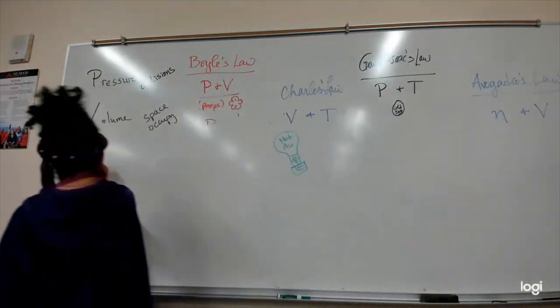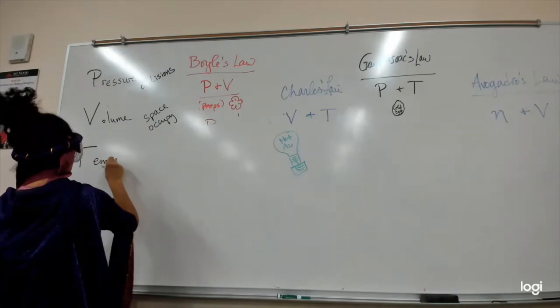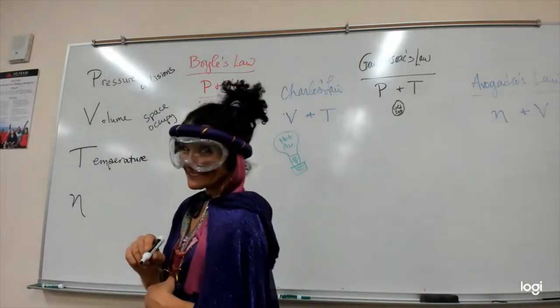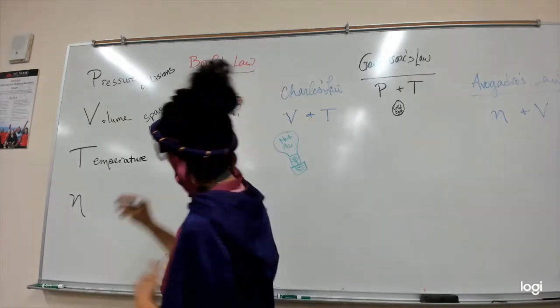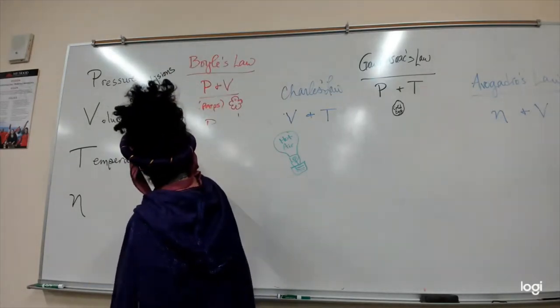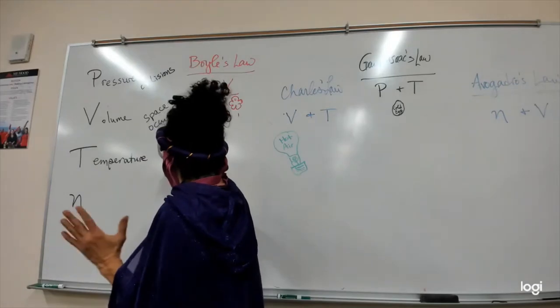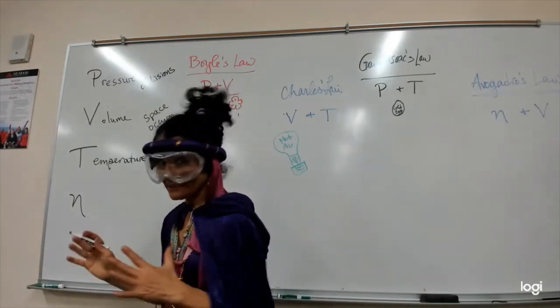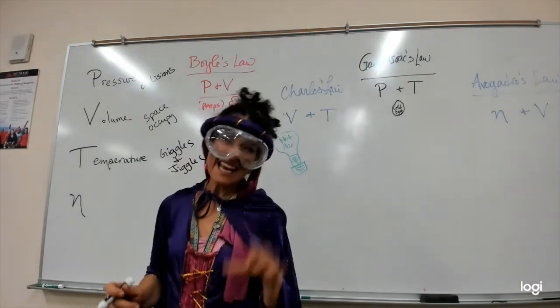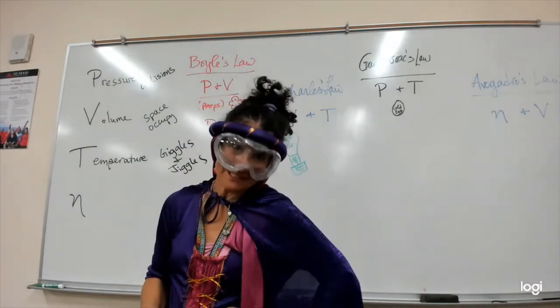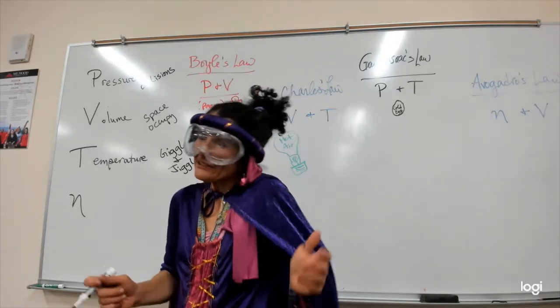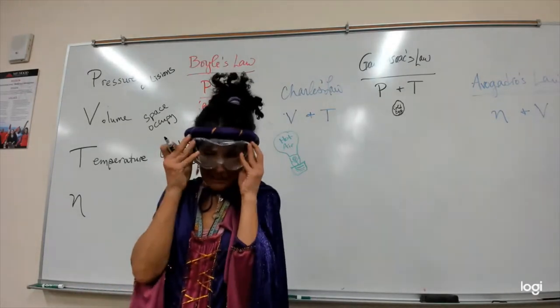T is for temperature. Temperature, in one word, maybe two, is the giggles and the jiggles. That is the thing that is unique about gases. Gases are giggling and jiggling. They're always moving. They're chaotic. If you want, you can say kinetic energy, capital K, capital E. You can be much more scientific there, or you can giggle and jiggle and be like a gas.